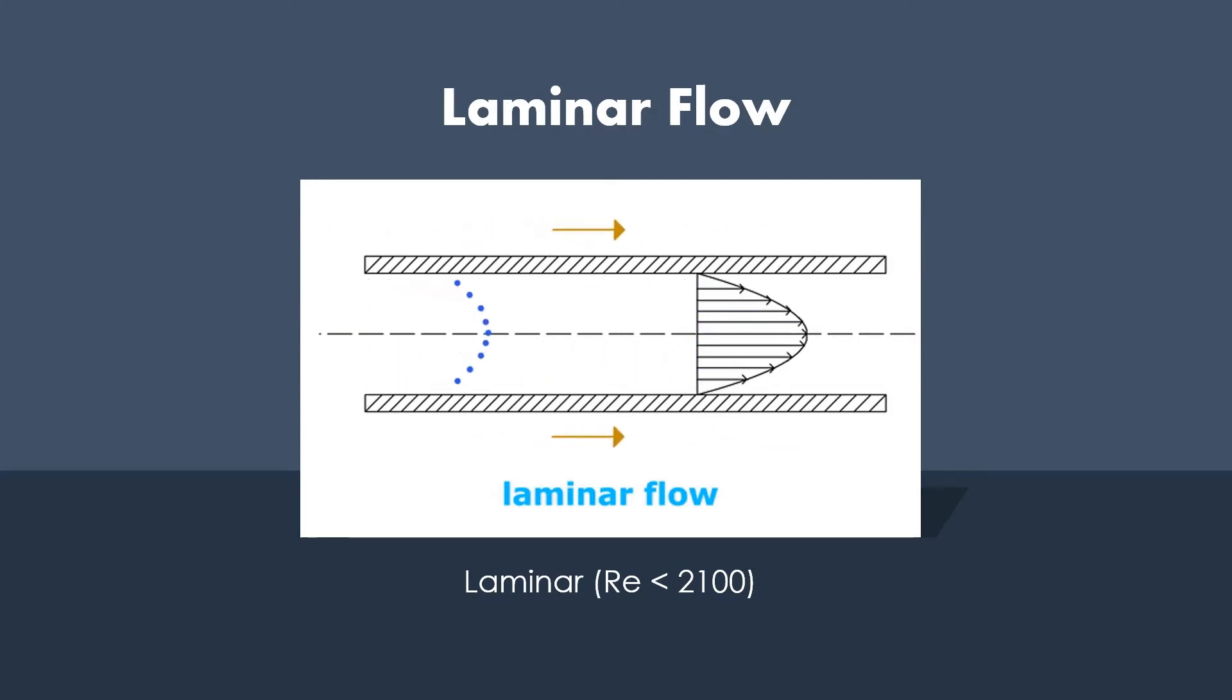And that is simply not true because if you look at this graph over here, the velocity profile of a laminar flow is not uniform where the maximum velocity is expected to be at the center of the pipe.